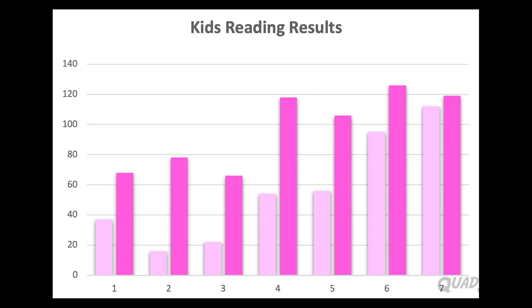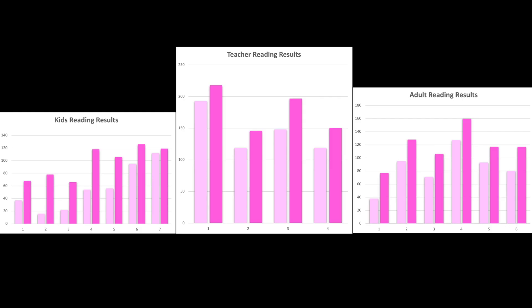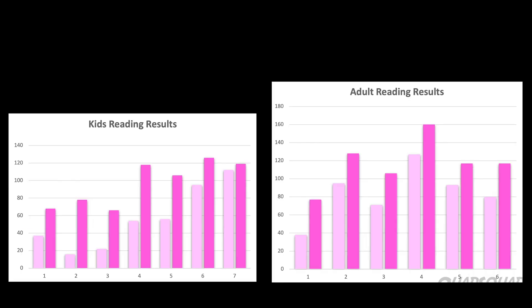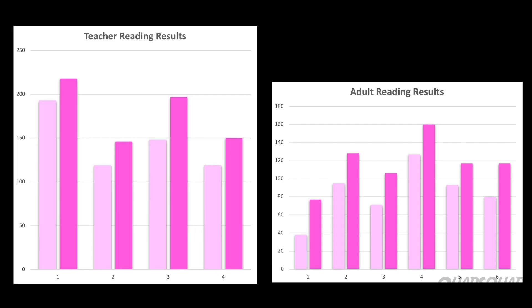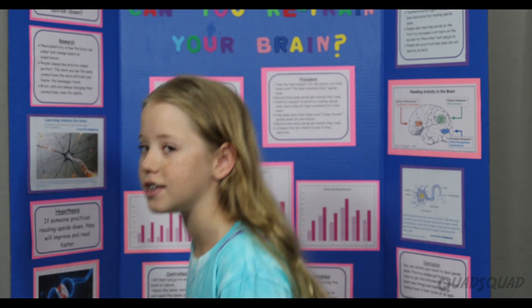We split our results into three categories: kids, teachers, and adults. The light pink is the first test and the dark pink is the second test. We noticed that every single test subject improved. Age didn't really make a difference, as you can see from the adult and kids charts. Teachers scored higher because they're used to working in an environment where they are constantly reading upside down. People who practiced fewer days didn't improve as much as those who practiced more. By the third day, all test subjects said it felt easier and they could read faster. It shows practice does make perfect.